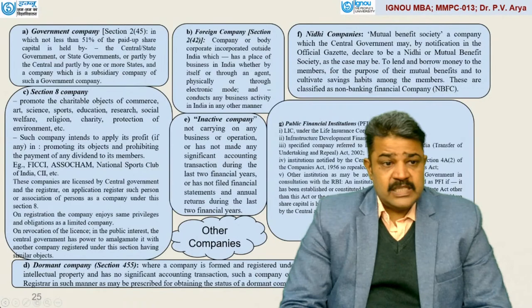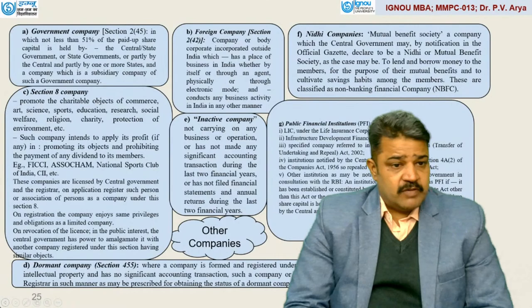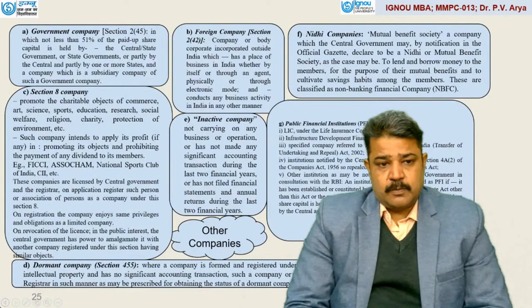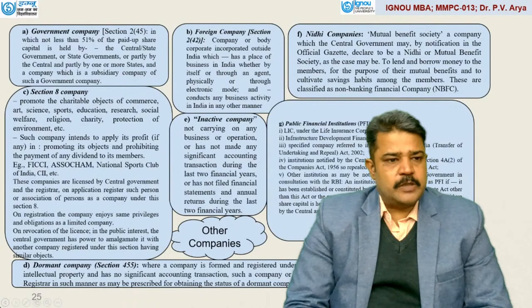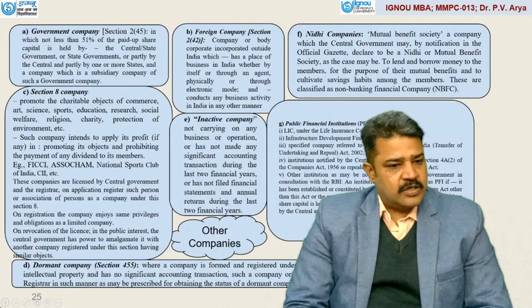Section 8 company promotes charitable objects of commerce, arts, sciences, sports, education, research, social welfare, religion, charity, protection of environment, etc. Such a company intends to apply its profits, if any, in promoting its objectives and prohibits the payment of any dividend to its members. Examples include FICCI, National Sports Club of India, CII, etc. These companies are licensed by the central government, and the registrar registers such persons as a company under Section 8. On registration, the company enjoys the same privileges and obligations as a limited company.